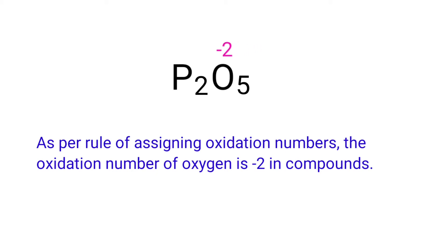We can write the oxidation number of the element above its symbol and the total number of the oxidation number of the atoms below its symbol.